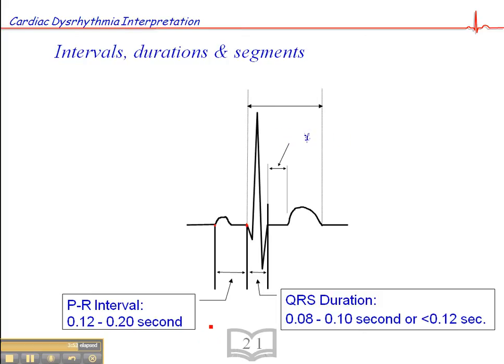The ST segment, not so critical when it comes to ECG rhythm interpretation. It becomes more important when we look at 12-lead ECG interpretation. It begins at the end of the QRS and ends at the beginning of the T wave. And the J point is where the QRS ends and the ST segment begins.